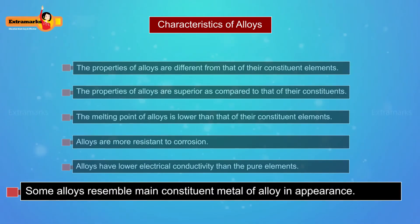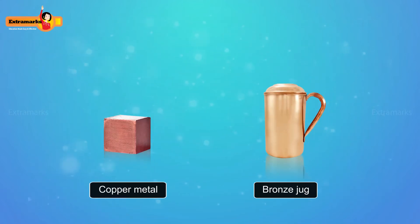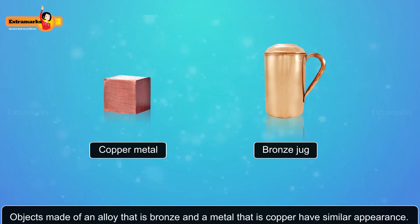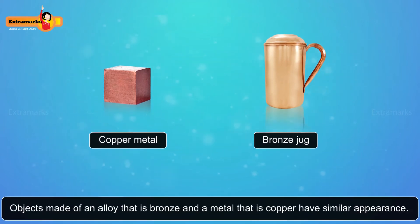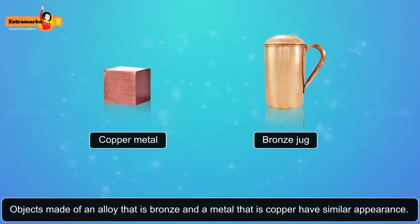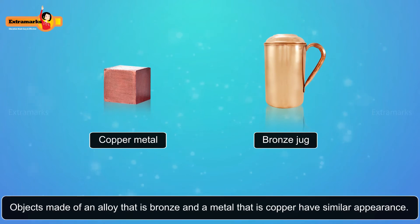Some alloys show resemblance in appearance with their main constituent metal. That is the reason numerous objects that are presumed to be metals are in fact made of alloys. For example, objects made of bronze and objects made of copper have a similar appearance.